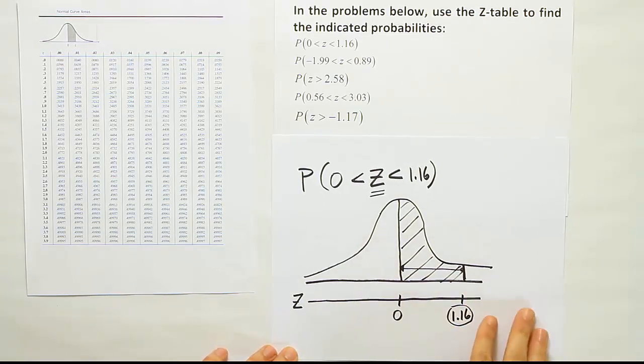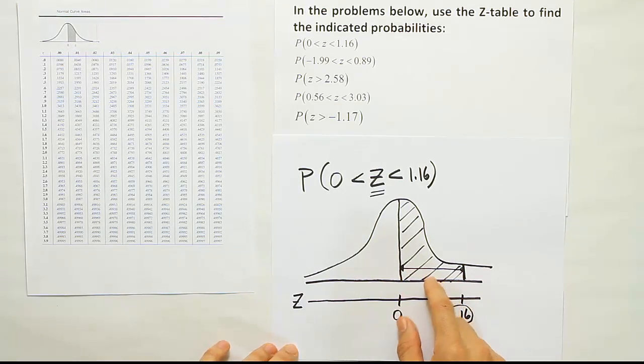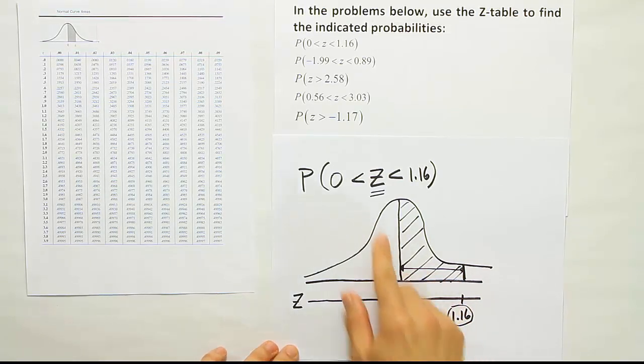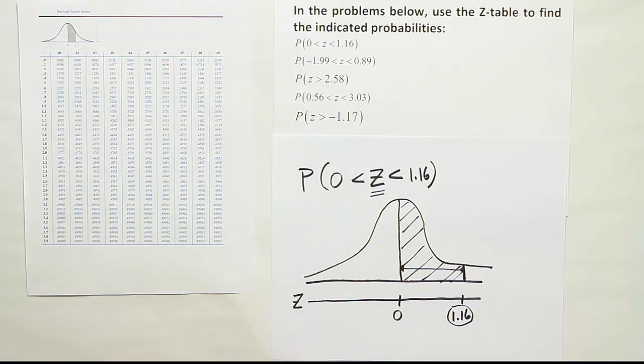So this, by looking up 1.16, we will get the area we need to solve this problem. And that's all we have to do. So this is like the most basic example of using the z-table to find probability. Okay, so now we're going to go to the table and look at what 1.16 gives us.